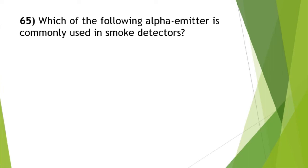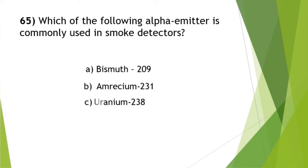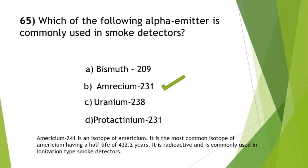Which alpha emitter is commonly used in smoke detectors? The answer is option B — americium-241. Americium-241 is an isotope of americium; it is the most common isotope with a half-life of 432.2 years. It is radioactive and commonly used in ionization-type smoke detectors.